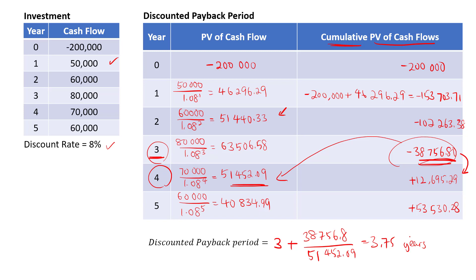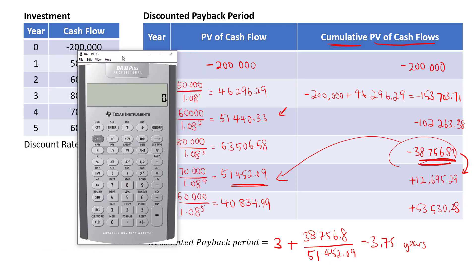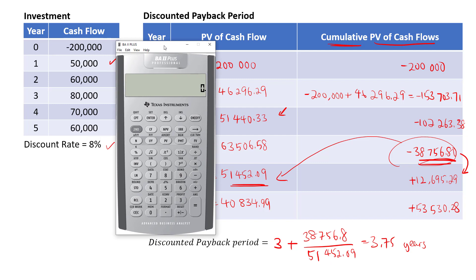Now we are going to calculate the payback period and discounted payback period again, but this time using a financial calculator — the Texas Instruments BA II Plus Professional version. If you are using the basic version, you can't get these figures through the built-in function. The newer professional version has a metallic black finish.